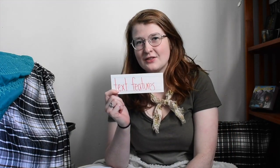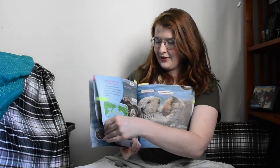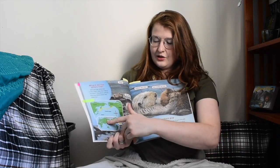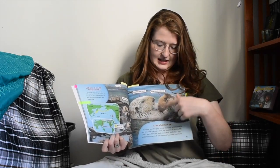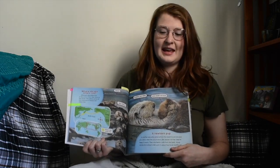Hi class, and welcome to today's lesson on text features — not just any old text features, but text features we can find in an informational or non-fiction story, and even more in particular in the one in your reading book today. You're going to be reading about sea otter pups, which is super adorable. There's a lot of great information in this story, including a lot of extra text features to help you get the most out of it.